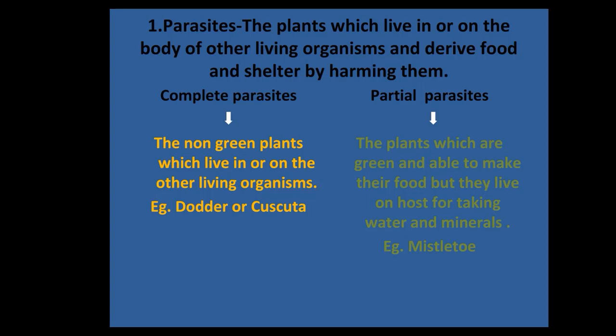The second type is partial parasites. These are green-colored parasites. Since they are green, they can make their own food. However, they are called partial parasites because they live on the host to obtain water and minerals. So they can make their food, but their water and mineral requirements are fulfilled by the host organism. The example for this is mistletoe.